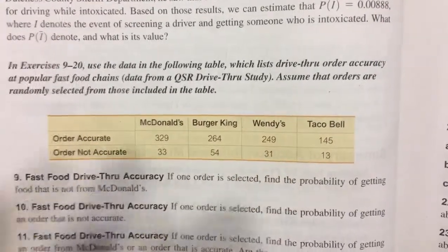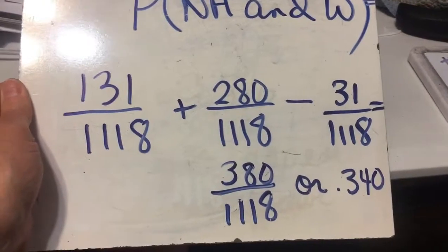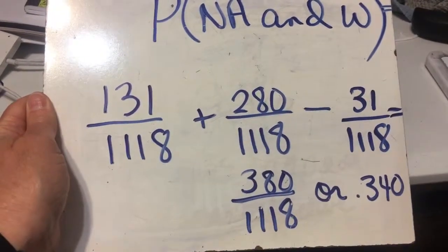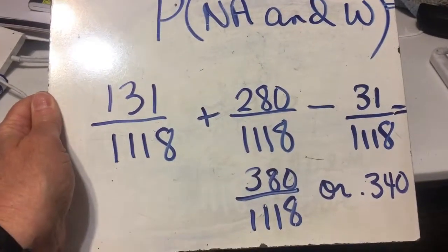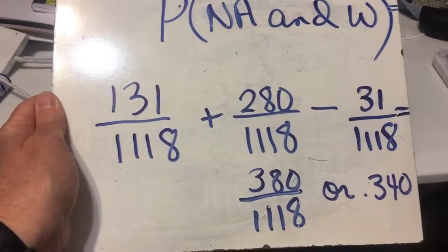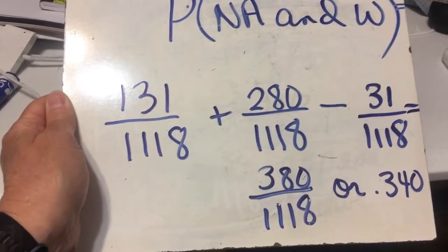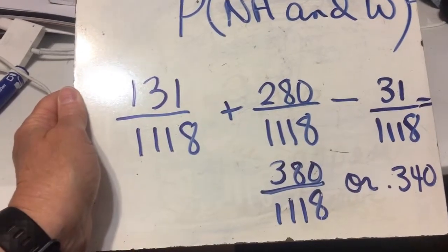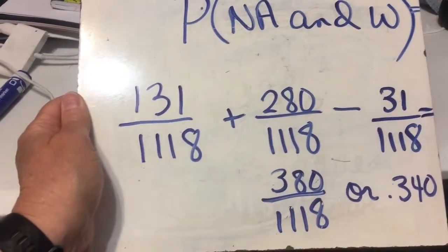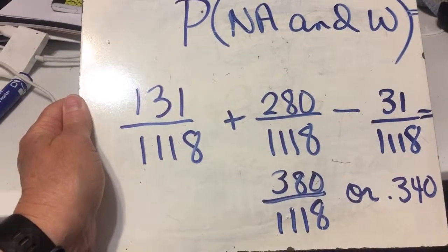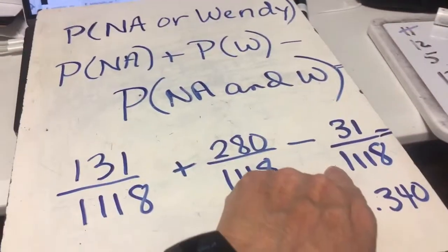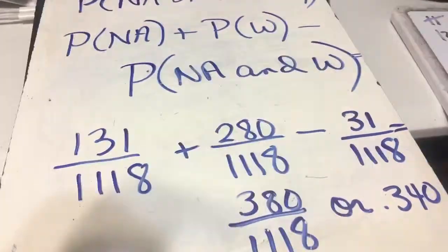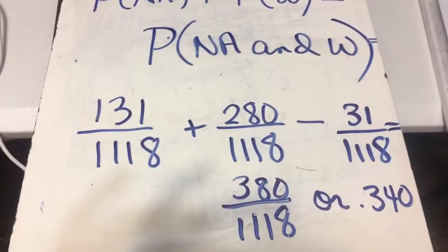So here are our calculations: 131 over 1,118 plus 280 over 1,118 minus 31 over 1,118 is 380 over 1,118, or 0.340, which is the answer in the book — it is correct. Also remember that these are not disjoint sets. If they were disjoint, there would be nothing in the overlap. We could not have both not accurate and Wendy's. So that is the end of problem number 12.